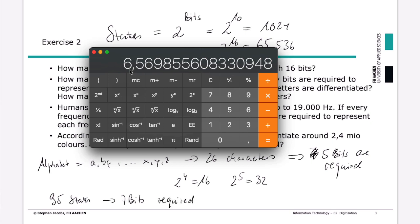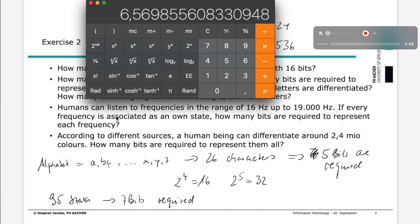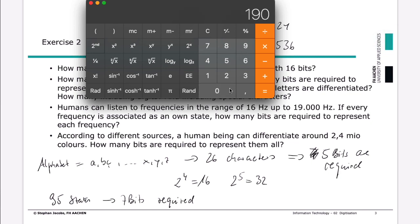And the other ones we can do in the same way. So let's have a look at the next one. Humans can listen to frequencies in the range of 16 hertz up to 19,000 hertz. If every frequency is associated as its own state, how many bits are required to represent each frequency? So you can go for 19,000 minus 16, which equals to 18,984.